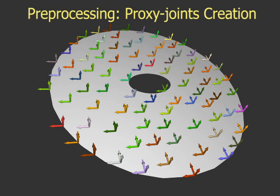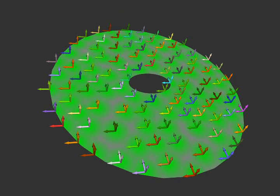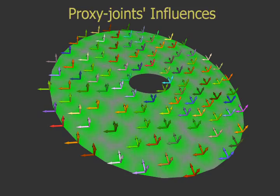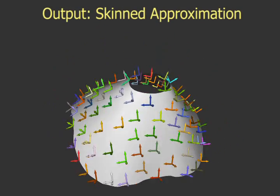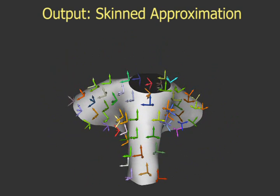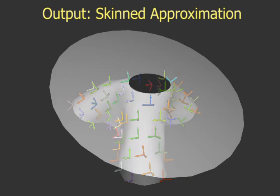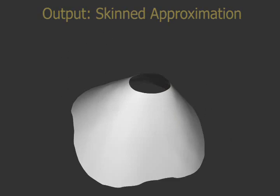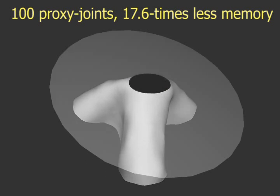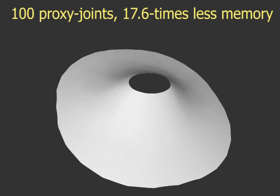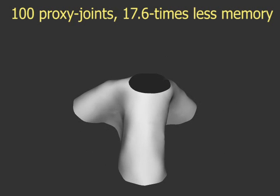Our algorithm first creates a simple rigging structure. Next, it fits the proxy joint transformations so that the original deformations are approximated as closely as possible. This allows a significant reduction in memory consumption while retaining the visual fidelity of the original animation.